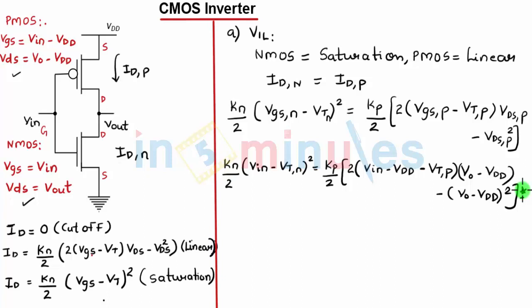Now we know that in order to identify VIL, this is a point where my slope is equal to minus 1. That means my DVout by DVIN is equal to minus 1, and we need to differentiate the star equation with respect to VIN.